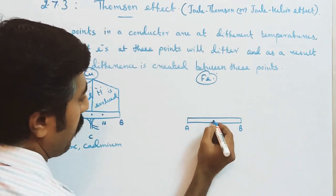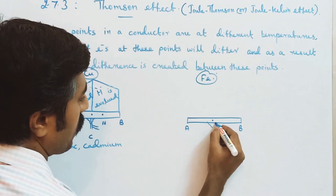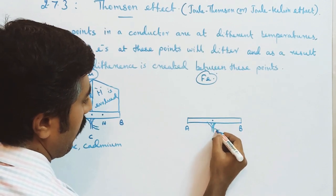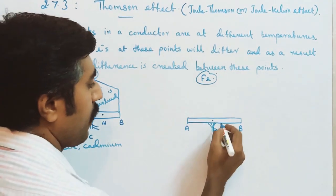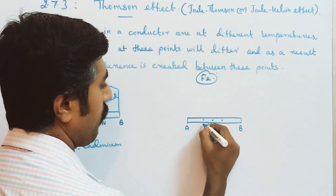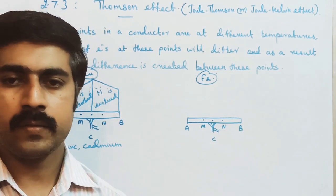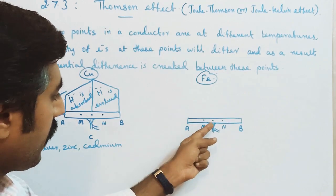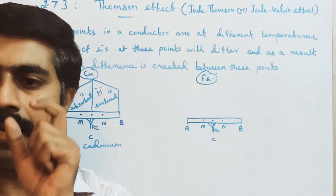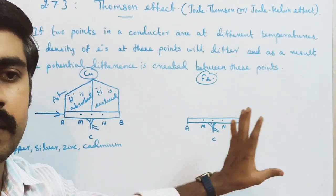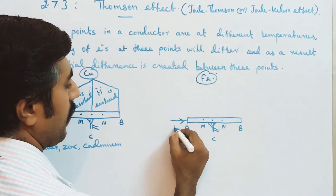The midpoint of the iron bar is denoted by C. We heat the midpoint C using a heating device. Equidistant points are chosen on either side of C.